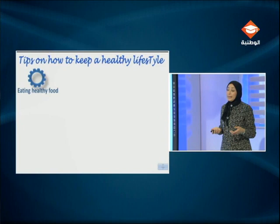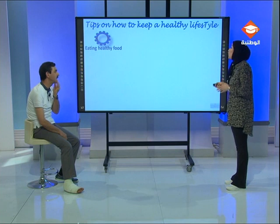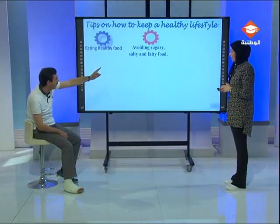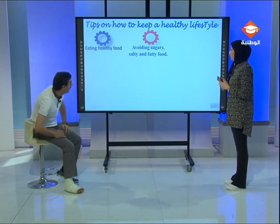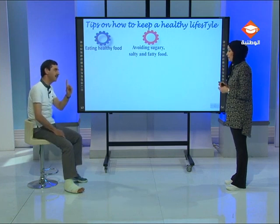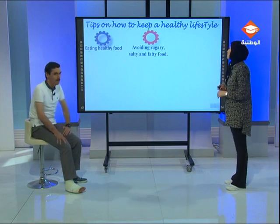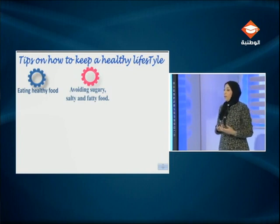We are going to talk about tips on how to keep a healthy lifestyle. It includes eating healthy food, which means automatically avoiding fast food, unhealthy food such as sugary, salty, and fatty food. These are adjectives derived from sugar→sugary, salt→salty, fat→fatty. But keeping a healthy lifestyle is not only about food — we may have other good habits that can help us stay healthy.